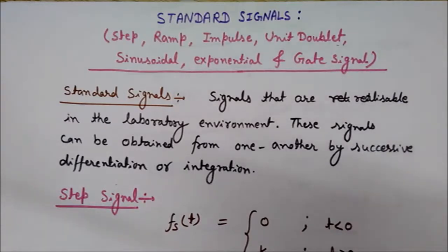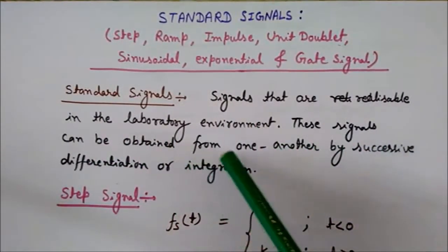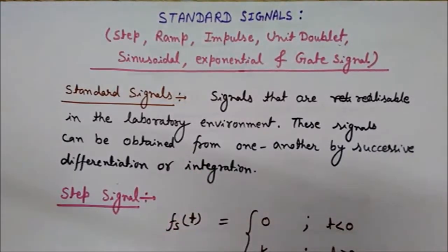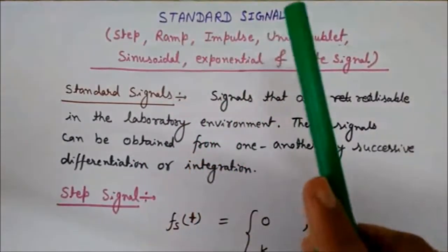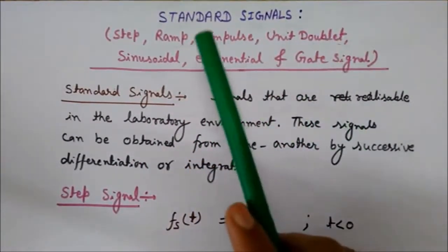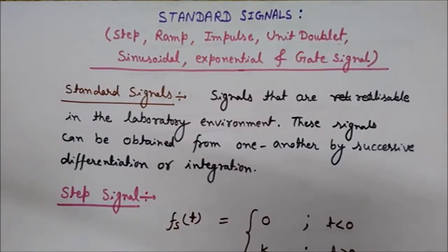These standard signals are realizable in the laboratory environment and can be obtained from one another by successive differentiation or integration. How these can be obtained by integration or differentiation we will see later in this video. We will now discuss some standard signals like step signal, ramp signal, impulse signal, unit doublet signal, sinusoidal, exponential, and the gate signal.